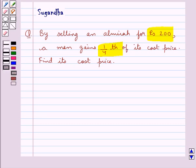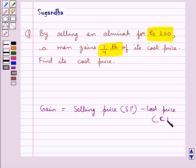Before we move on to the solution, let's recall the formula for gain. Gain is equal to the selling price (SP) minus the cost price (CP). This is the key idea for this question.